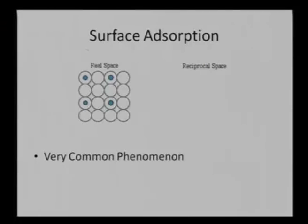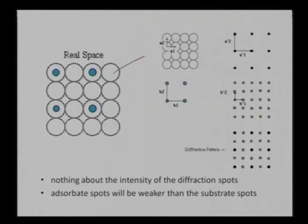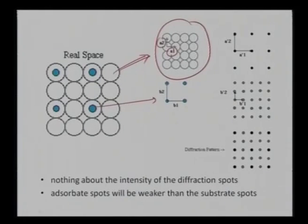In certain cases with surface adsorption, I can have a matrix with adsorption of certain entities ordered in a certain manner — an adsorbate with some symmetry, like a couple of monolayers on top of a particular matrix. This is a common phenomenon. The overall structure can be divided into the matrix and the adsorbate. For a particular matrix with lengths a₁ and a₂ in real space, I take it to a₁' and a₂' in the reciprocal lattice.